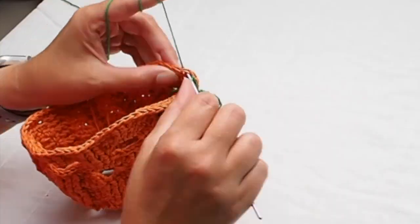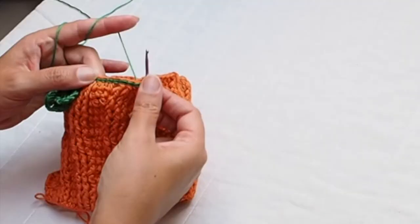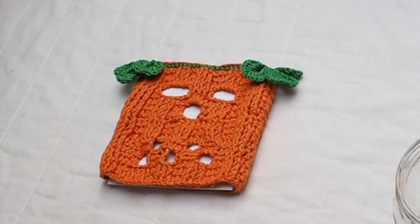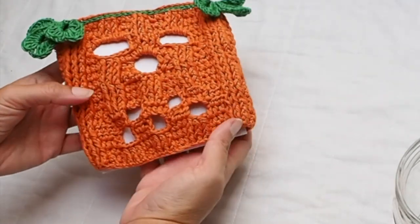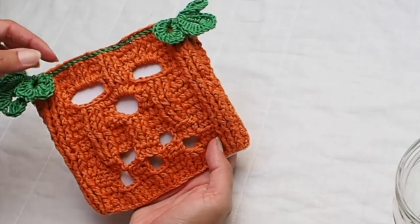Just slip stitches all around, and the same leaves on the left side. And this is how my final sleeve looks like.